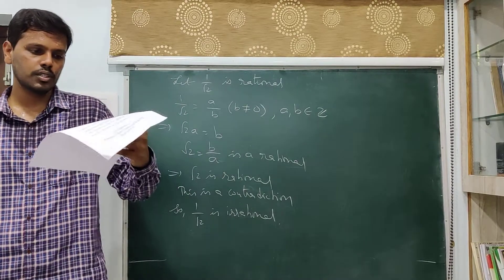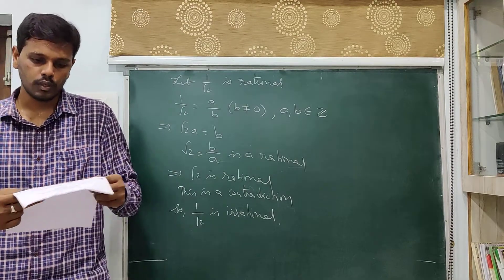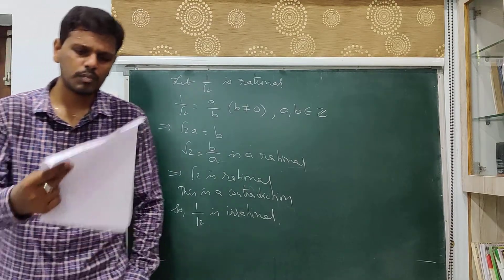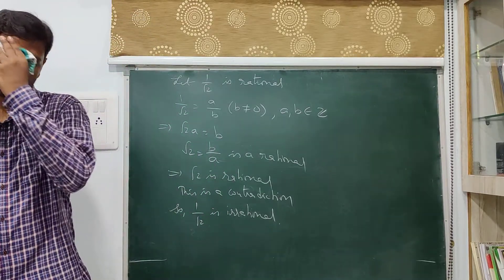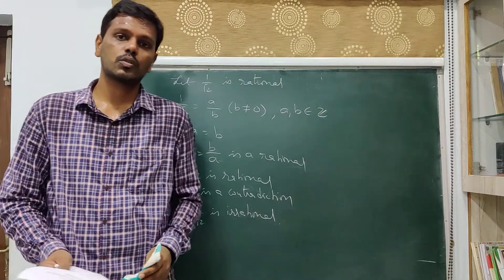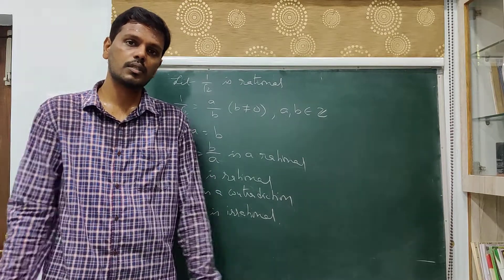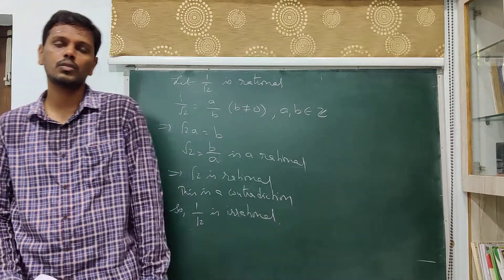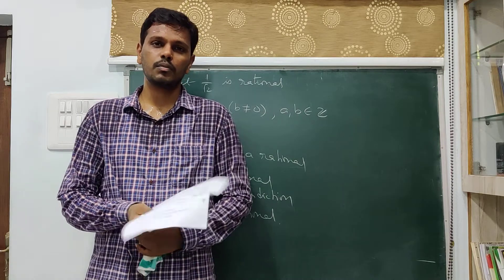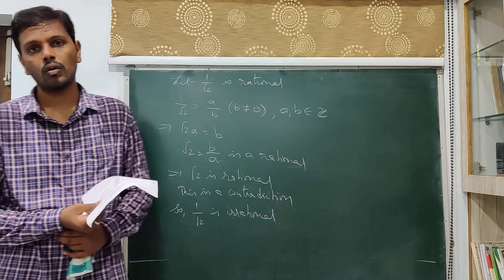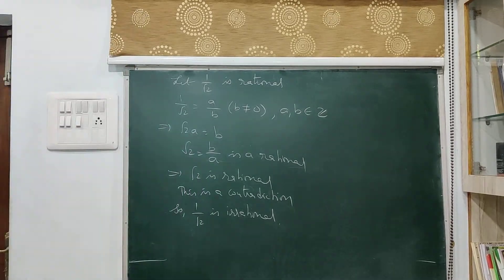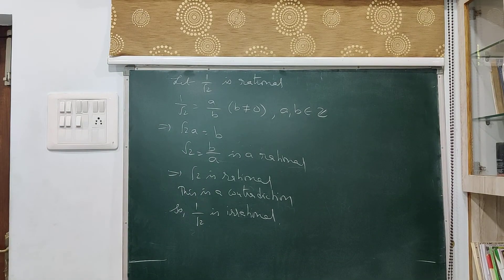That is it about this worksheet. The problems left over are for homework, and they are rather easy. Along with these problems, I want you to learn the identities (a+b)² and (a-b)², because in the next set of problems we will be using them to prove some numbers as irrational. That is it for today. Thank you.